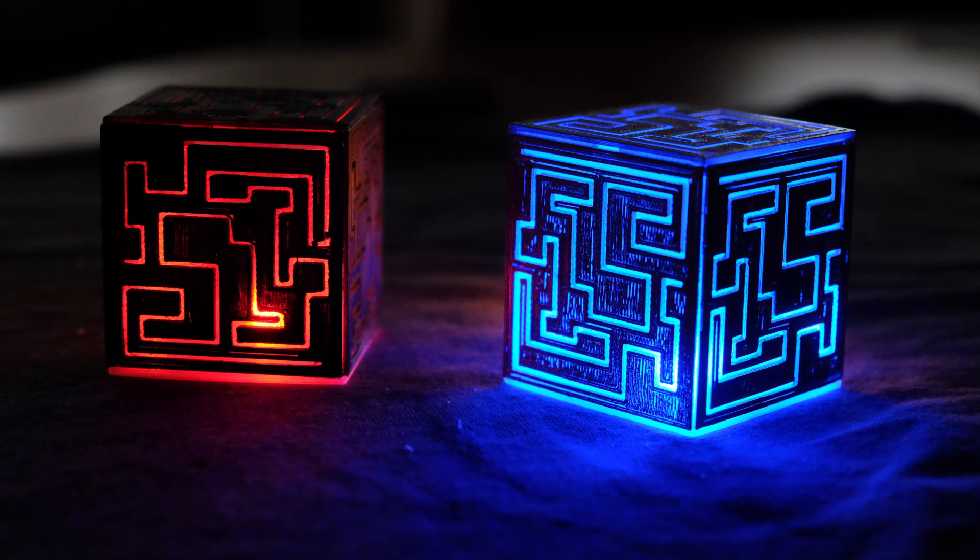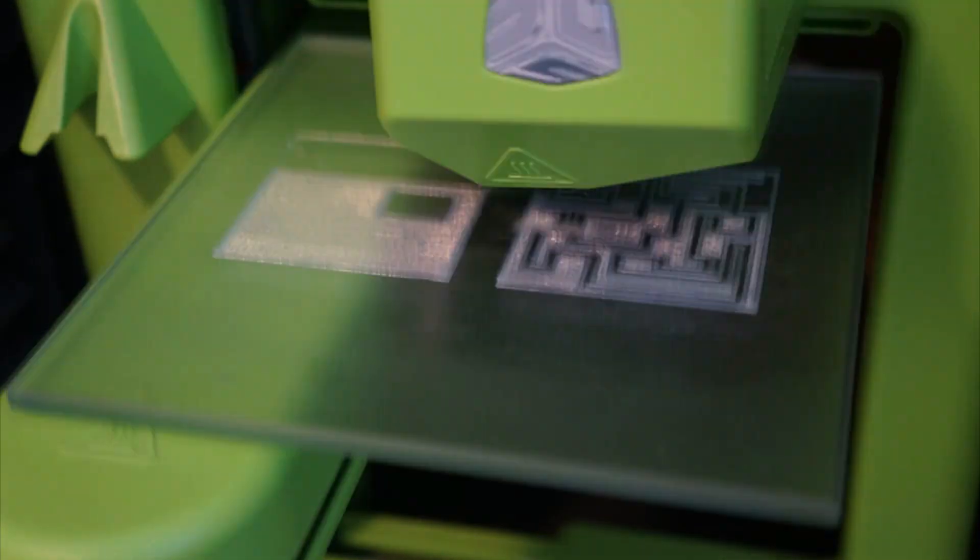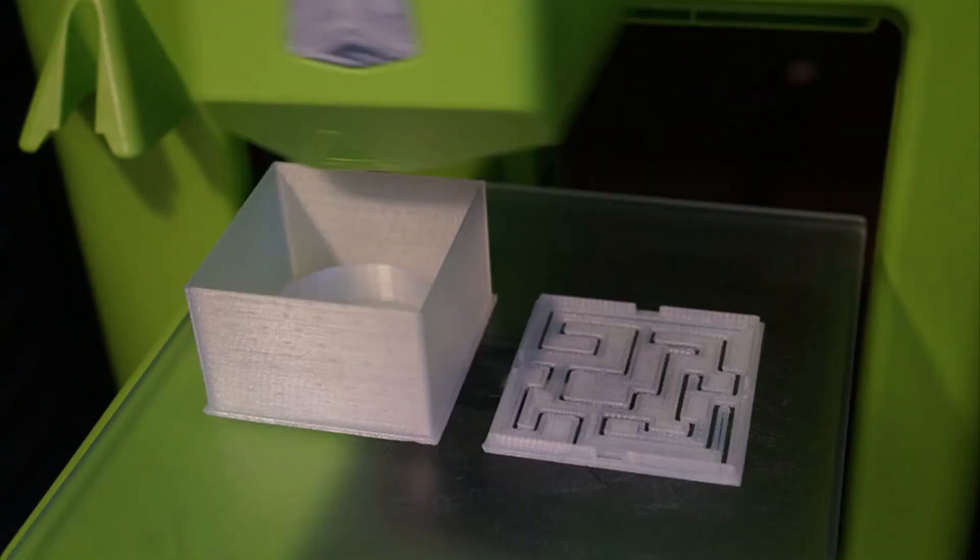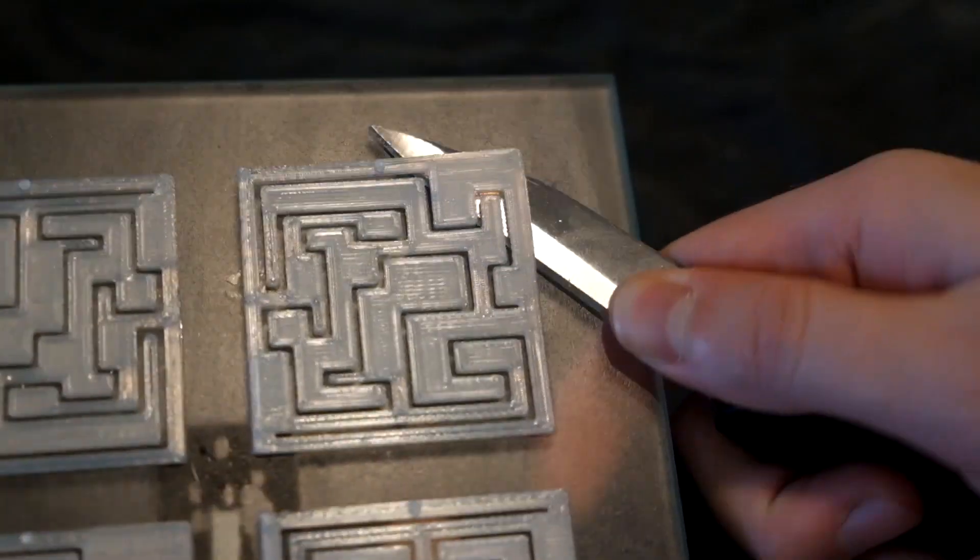Let's start by 3D printing the two files. One has the 4 sides of the cube and the other has the bottom and the lid. Be careful when removing the pieces from the print bed because the pieces are very thin.